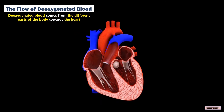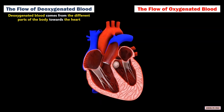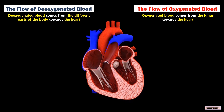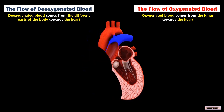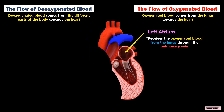The flow of oxygenated blood: oxygenated blood comes from the lungs towards the heart. The left atrium receives the oxygenated blood from the lungs to the pulmonary vein.